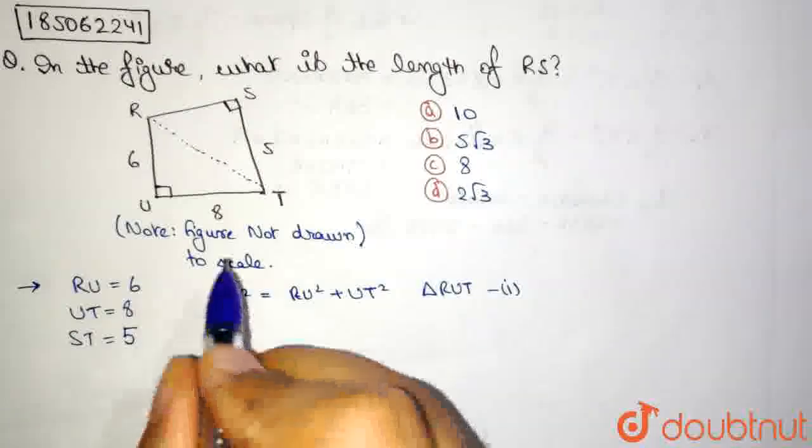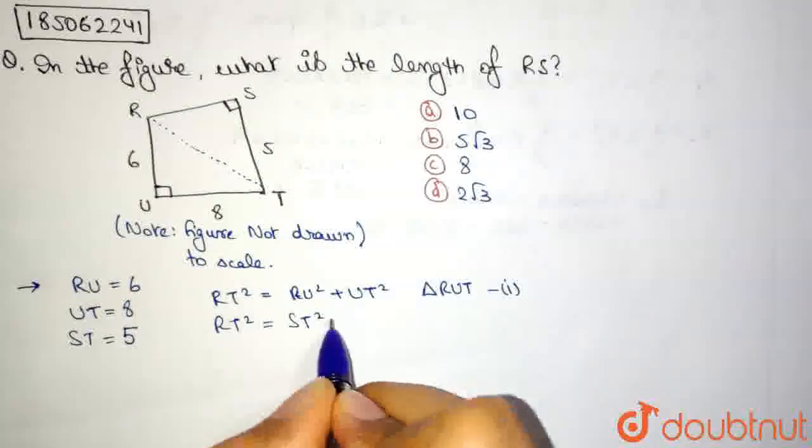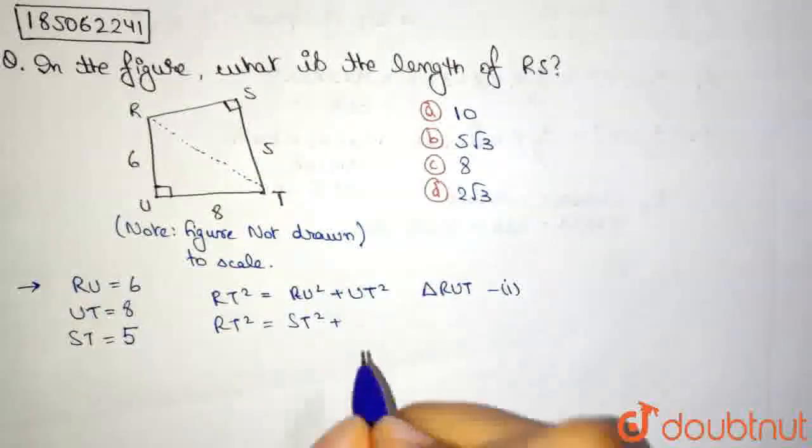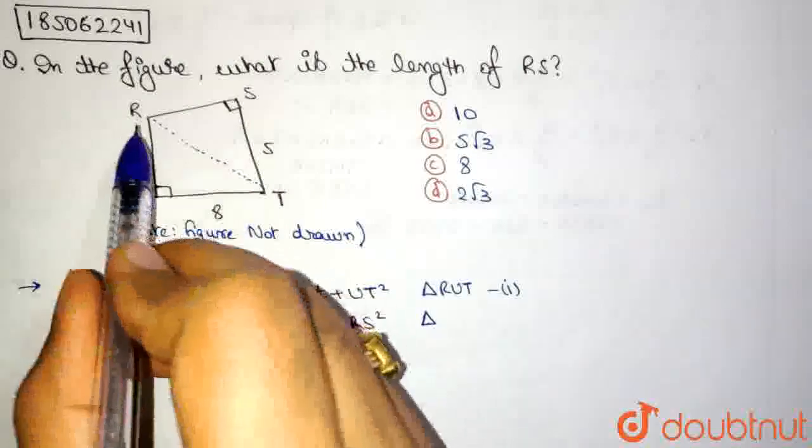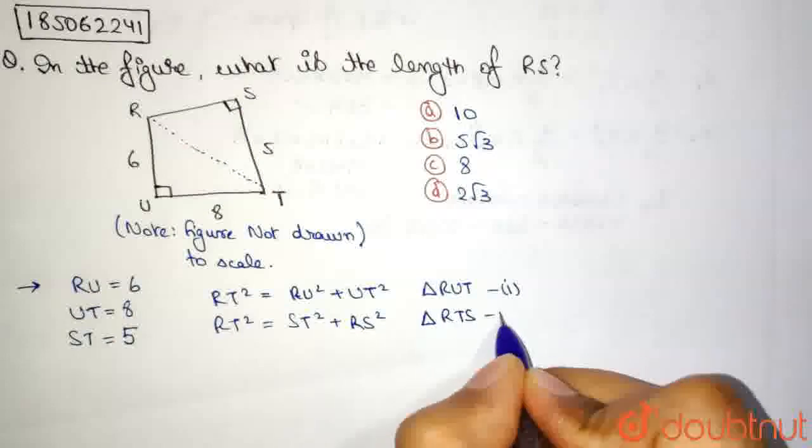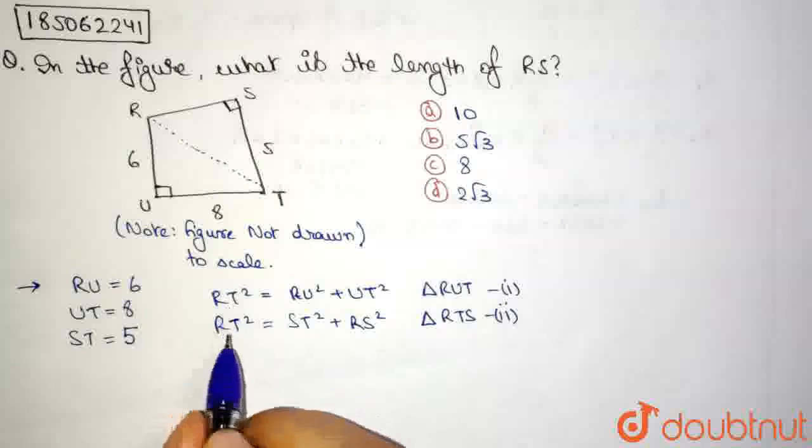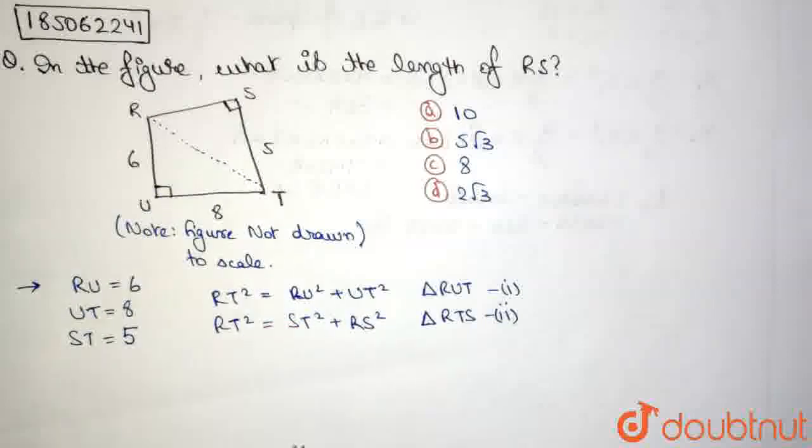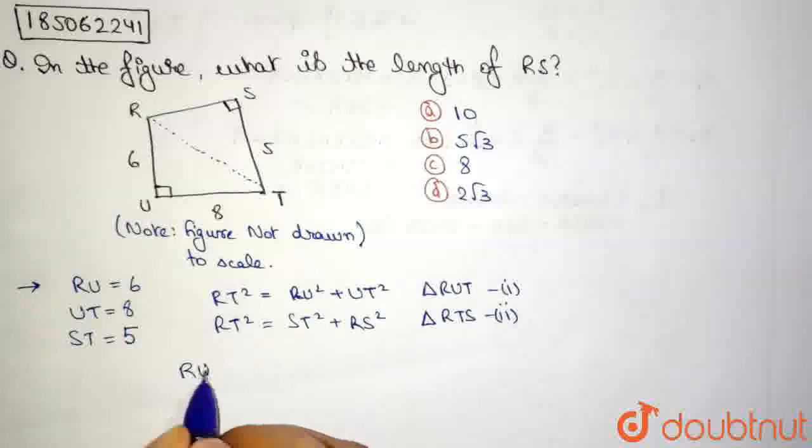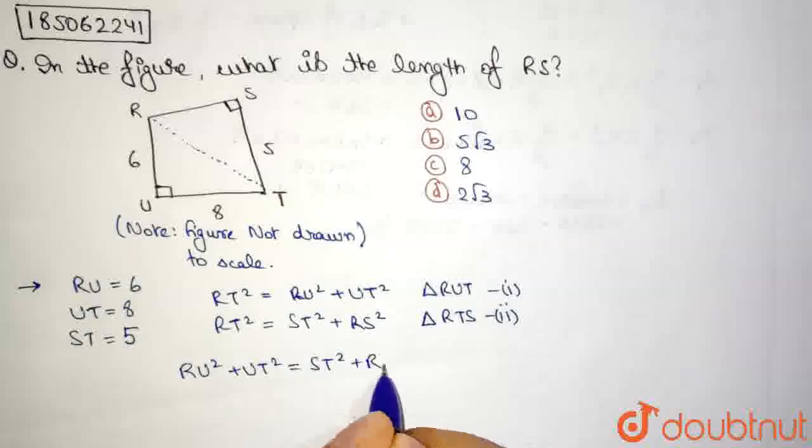And we can also say that RT square is equal to ST square plus RS square from triangle RTS. This is our equation 2. Now, we can see that on both the equations, on the left side, we have RT square. And on the right side, we have the 4 sides of this particular figure. So if we equate 1 and 2, we obtain RU square plus UT square is equal to ST square plus RS square.